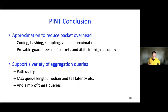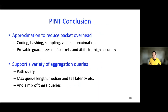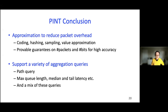In conclusion, I've shown the power of approximation in reducing packet overhead in INT. We showed how coding is useful, but in our full work we also use other approximation techniques like hashing, sampling, and value approximation. Overall, we can provide provable guarantees on the number of packets and bits needed to achieve high performance. PINK supports a wide range of aggregation queries, not only the path query but also queue length, median tail latency, and a mix of all these queries.